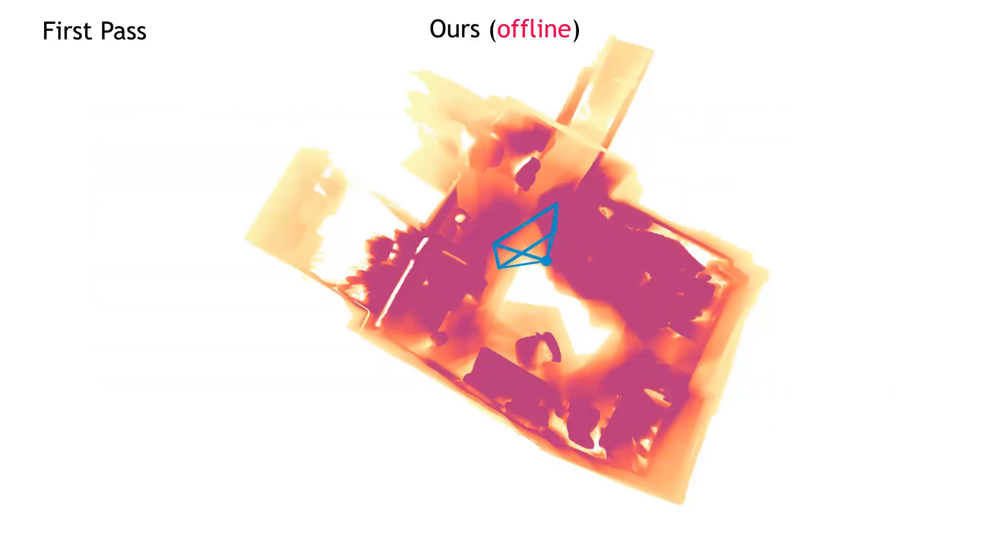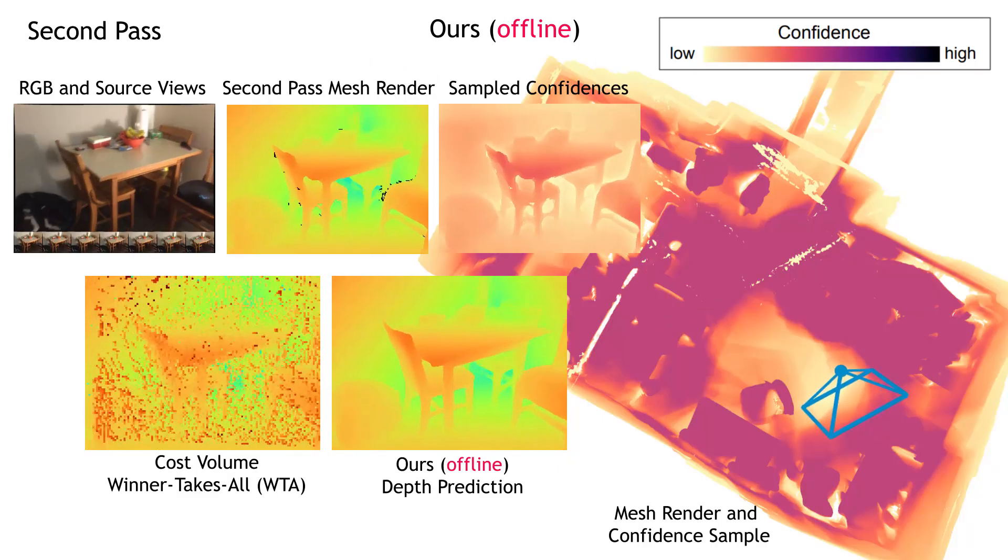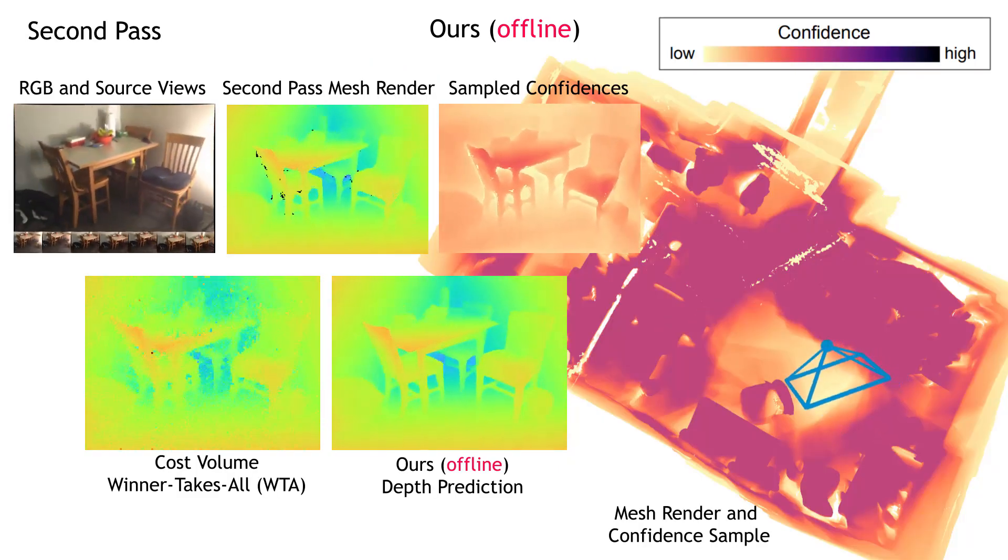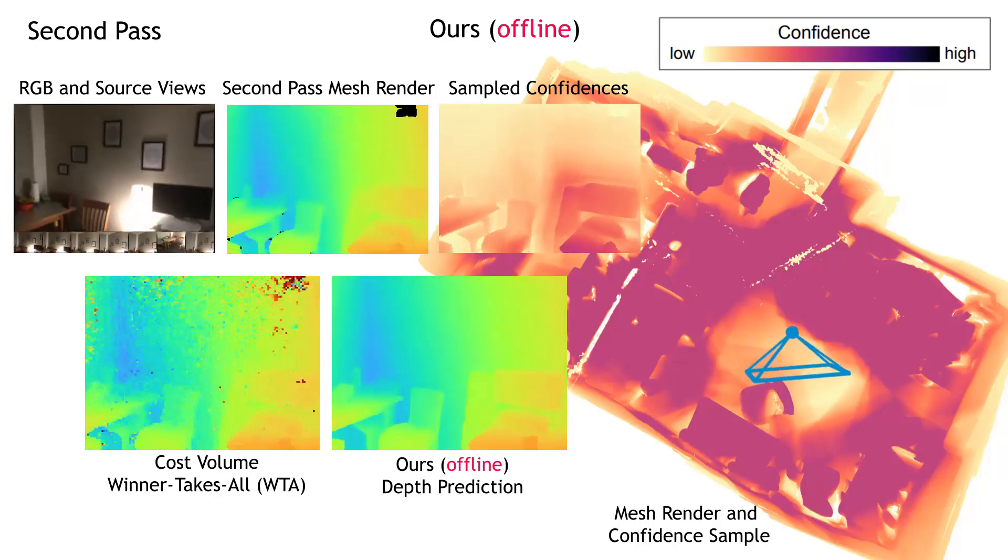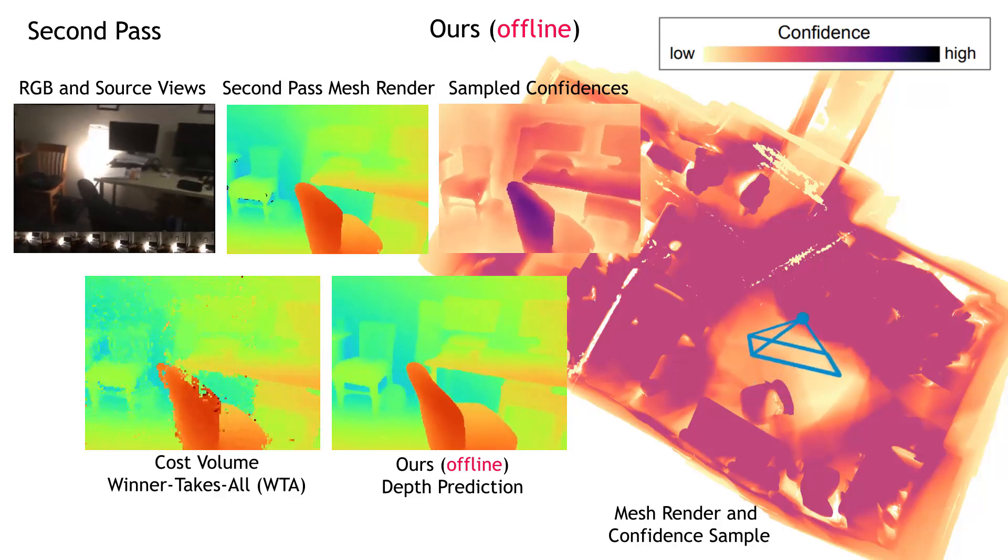Our model is flexible, and can also be used for offline depth estimation and reconstruction. We run the model once to produce a hint mesh, then run it again, using renderers of the hint mesh for new predictions. This yields a new state-of-the-art for offline feedforward reconstruction, taking an average of 13.8 seconds on the ScanNetv2 test set.